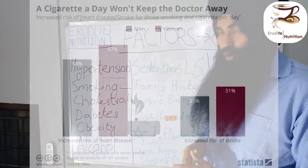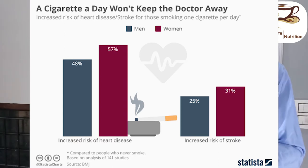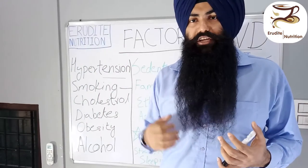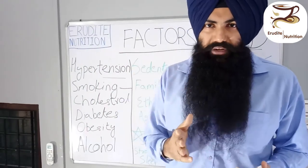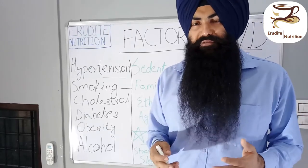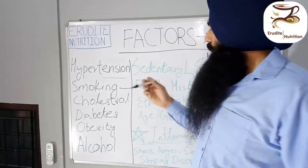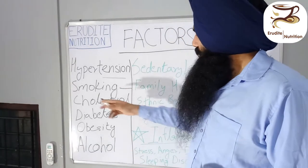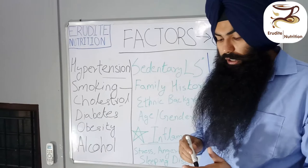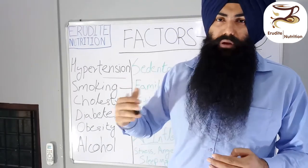The second factor is smoking. If you are a smoker, it is going to drastically increase your risk of cardiovascular disease. Smoke inhaled is harmful for your lungs and disrupts the whole respiratory system. It also has a very negative effect on the arteries of your heart, so smoking is a very big factor.